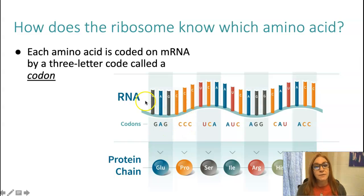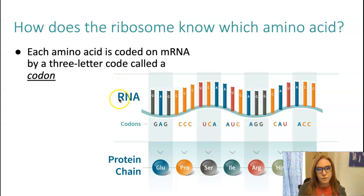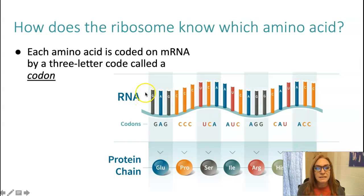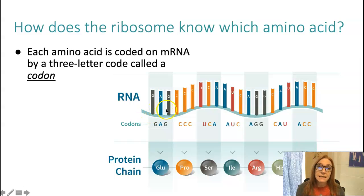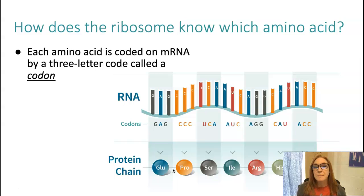Each amino acid in that group of 20 is coded for in an mRNA molecule by a three-nucleotide code. The letters that make up this RNA strand are nucleotides. Every three nucleotides makes a codon, and each codon calls for a different amino acid. Each amino acid is called for by three different codons. The ribosome reads these letters — every three letters it identifies which amino acid to retrieve — and tRNA brings that amino acid, linking them together in that chain of beads.